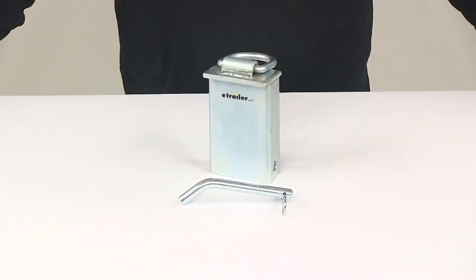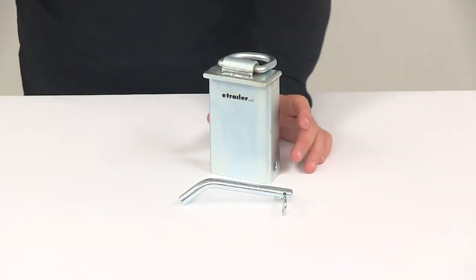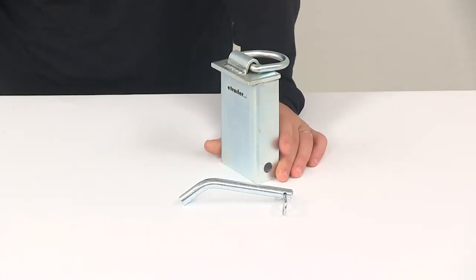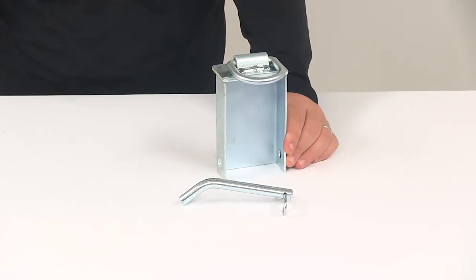Today we're taking a look at a stake pocket tie-down anchor for flatbed trucks or trailers. This is going to fit into a standard 2x4 stake pocket. It can be easily removed and reinstalled as needed. It's got a convenient, easy to use design.